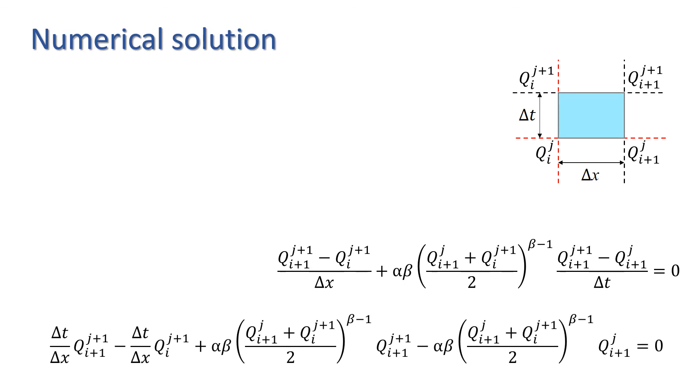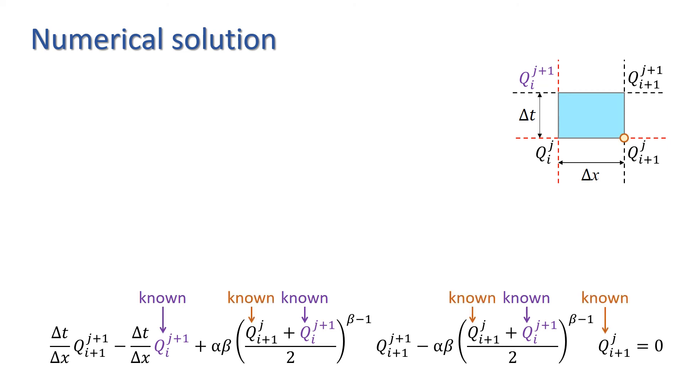Reminding ourselves again that since at each time step we will start from the left with a known value, Q_ij+1 is known when we apply this equation at a particular grid point. Similarly, because we step in time from j to j plus 1, we've already calculated Q_i+1j when we apply this equation.